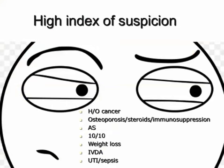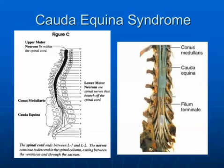When should you have a high index of suspicion of a serious problem in a patient with low back pain and a normal x-ray? A history of cancer — as patients get older there's a much higher incidence. Osteoporosis, patients on steroids, rheumatoid or immunosuppressed patients, ankylosing spondylitis patients — these have a high index of suspicion for fracture because their spine is fully stiff. Ten-out-of-ten pain, unexplained weight loss, IV drug abusers who can have an abscess, and concurrent urinary tract infection suggesting abscess.